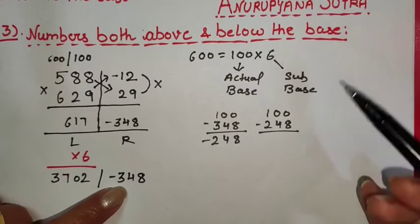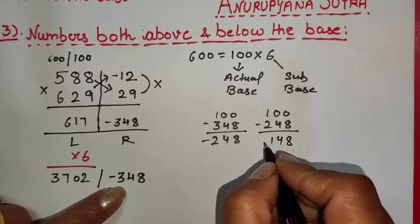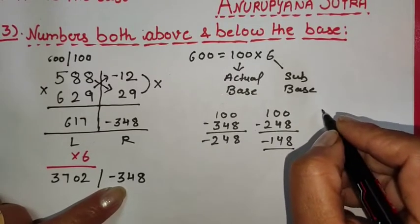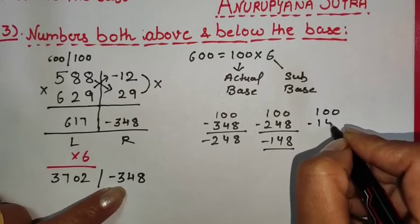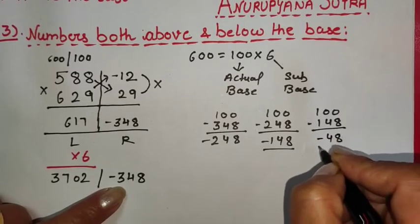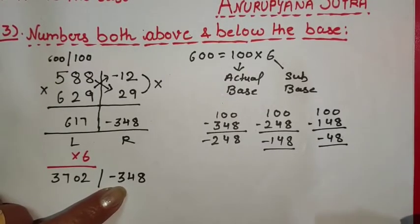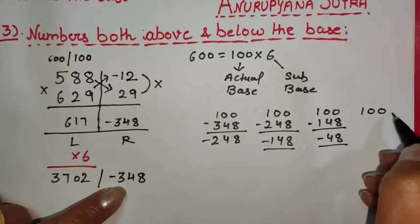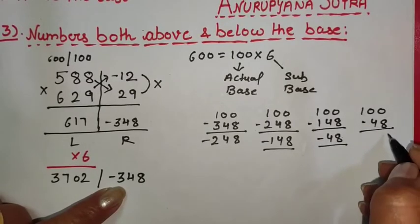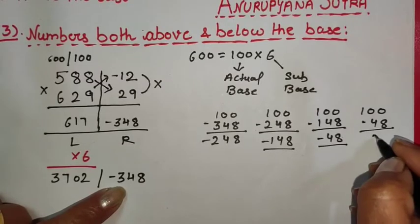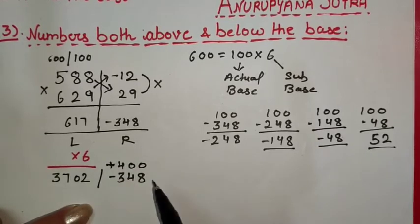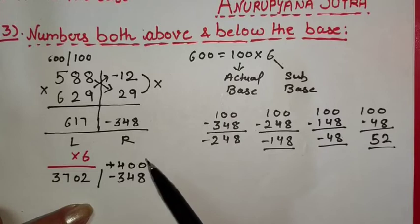To remove the minus sign, we subtract the new answer from the base again. Subtracting again gives another negative number, so we subtract from the base once more. After subtracting again we still get a negative number, so we subtract one more time. On this final subtraction from the base we get a positive answer: 52. This is our final right-hand side answer.